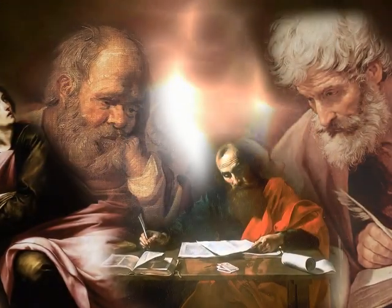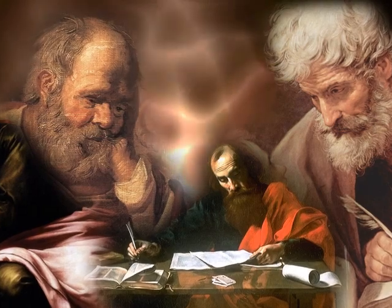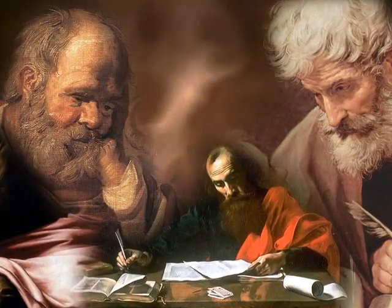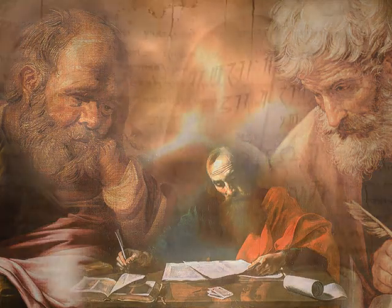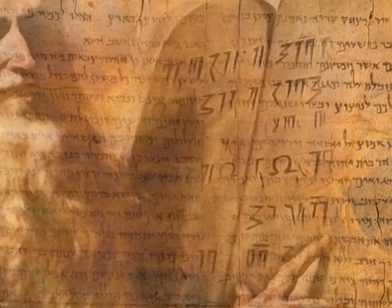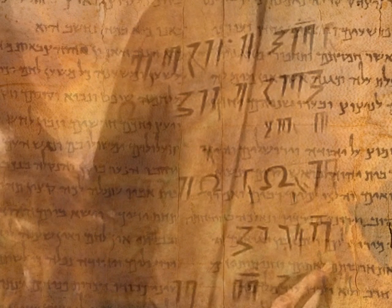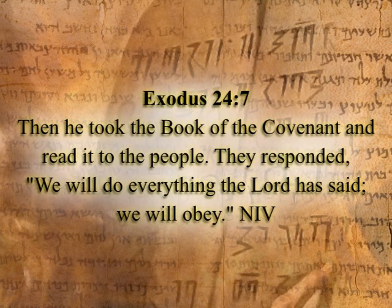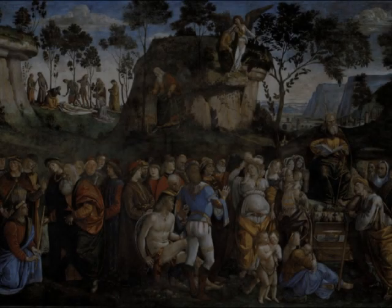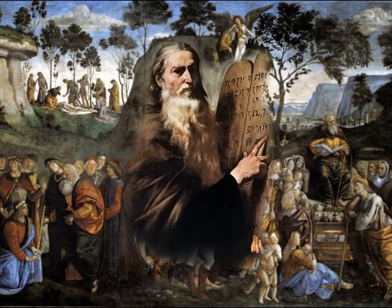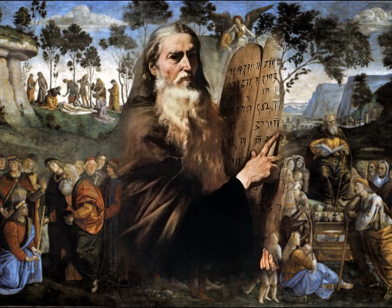The doctrine of biblical inspiration and a defined canon process can clearly be found in the writings of the early patristic church fathers. But back into the history of Israel, we find writings that had divine authority and served the Israelite community as a rule of faith. 'Then he took the book of the covenant and read it to the people. They responded: we will do everything the Lord has said, we will obey.' We see Moses reading the book of the covenant to his people, and they recognized that this book was authored by God and had divine authority.